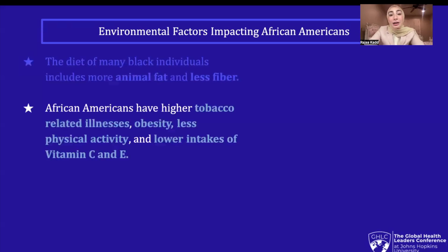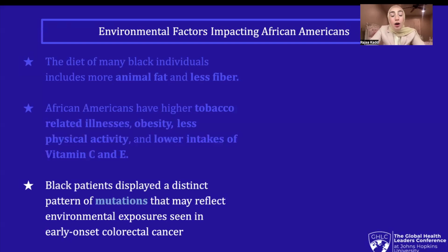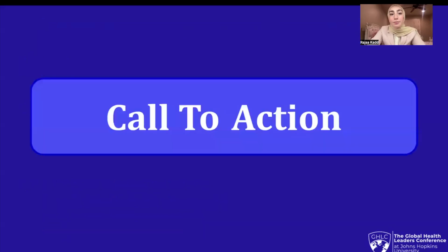For environmental factors impacting African Americans, found by colorectal surgery associates at Kansas City, the diet of many Black individuals includes more animal fat and less fiber, and animal fat is a very large risk factor for colorectal cancer. Additionally, African Americans have higher tobacco-related illnesses, obesity, less physical activity, and lower intakes of vitamin C and E. Also, Black patients display a distinct pattern of mutations that may reflect environmental exposure seen in early onset colorectal cancer.